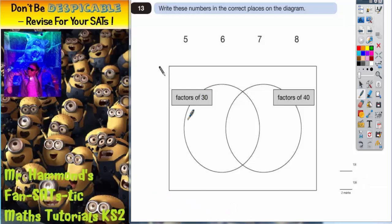Now the question is how do we use this diagram? Well on the left we've got a circle for factors of 30. So any numbers which are factors of 30 have to go in this circle. On the right we've got a circle for factors of 40. Any numbers which are factors of 40 have to go on the right.